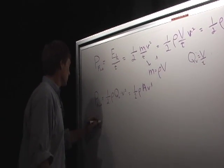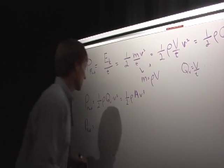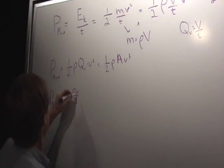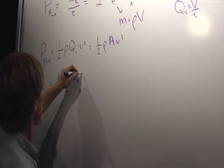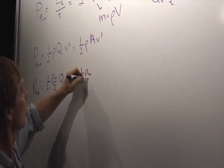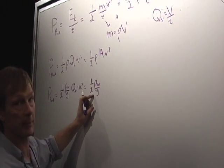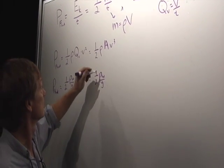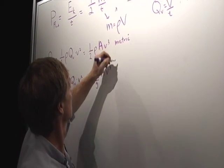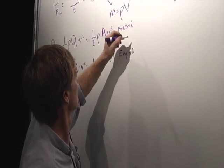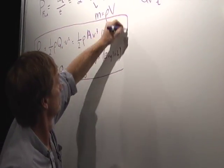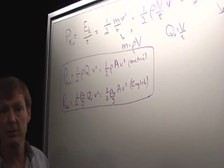In English units, we don't usually talk about the mass density. We talk about the weight density. So we would say 1/2 weight density over gravity times the volume flow rate times the velocity squared, or 1/2 weight density of the material over gravity, because mass density is just weight density divided by gravity, times the area times the velocity cubed. That's metric. That's English. And these are the big new equations for fluid mechanical power.